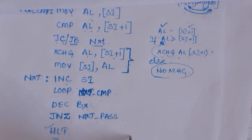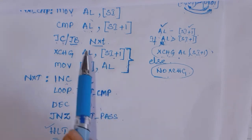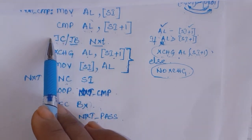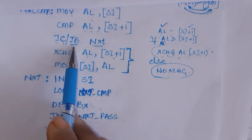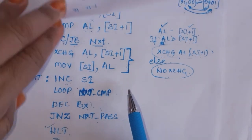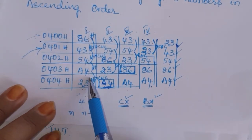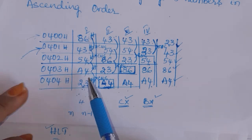Come to halt — this is the end of the program. By the time it reaches this instruction, all five elements must have been arranged in ascending order. This is for unsigned numbers. If it is signed numbers, you should use jump if greater or jump if less instructions instead.